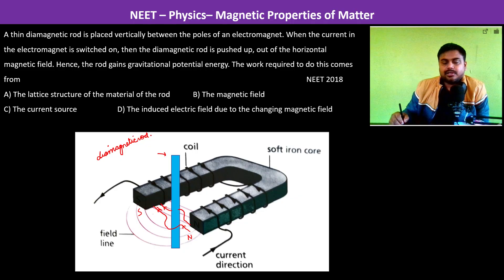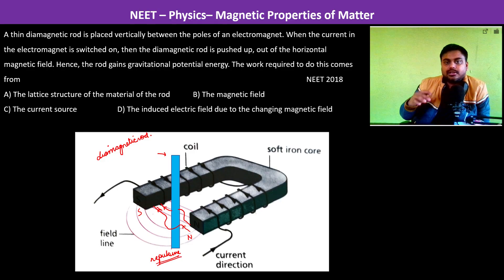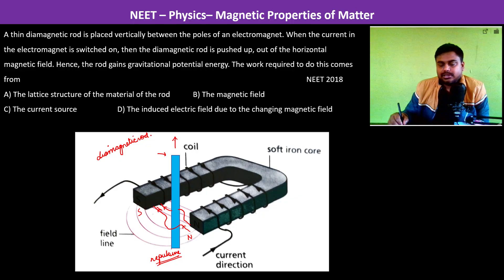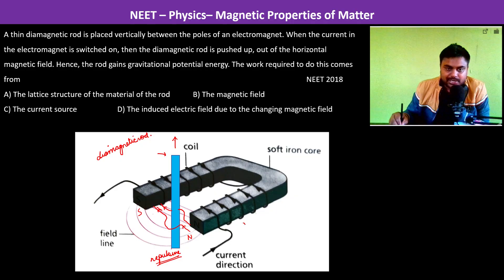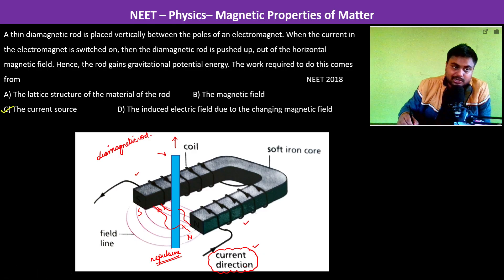Basically, the diamagnetic material is repulsive. Since it is repulsive, the repulsion occurs and thus this diamagnetic rod goes up, and therefore the gravitational potential energy is increased. Now since this entire operation is done with the help of current and it is like an electromagnet, the work done will be done by the current source which is activating the electromagnet.